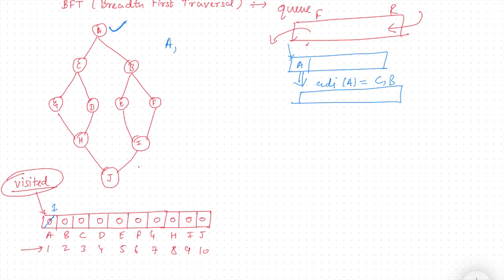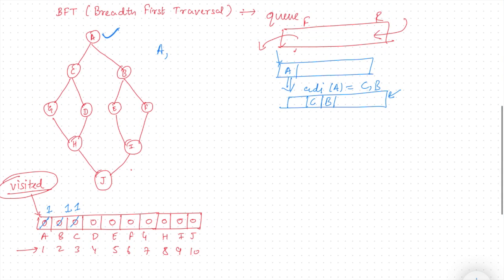A will get popped out from the front of the queue. From the rear, I will put C and B into the queue. But before putting them in, I first check their status. Since C and B have not been visited, I change their status to one and keep them in the queue.